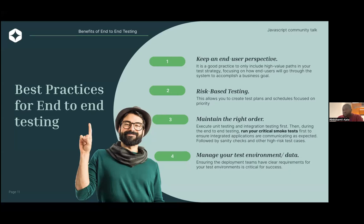You also want to make your tests risk-based. What are the things that could go wrong? What would be the impact of these things going wrong? Then you also want to maintain the right order — you want to execute your unit testing, integration testing, and then run your critical small tests in form of the UI tests to ensure things are working as expected. You also want to manage your test environment and data, making sure your test data mirrors what a real day-to-day use will be like. Try as much as possible to be as close to reality as possible.